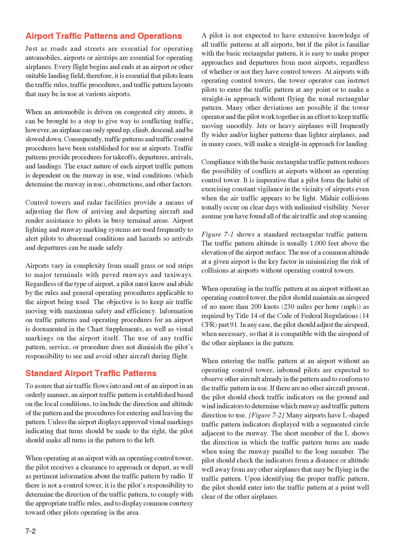When an automobile is driven on congested city streets, it can be brought to a stop to give way to conflicting traffic. However, an airplane can only speed up, climb, descend, and be slowed down. Consequently, traffic patterns and traffic control procedures have been established for use at airports. Traffic patterns provide procedures for takeoffs, departures, arrivals, and landings.